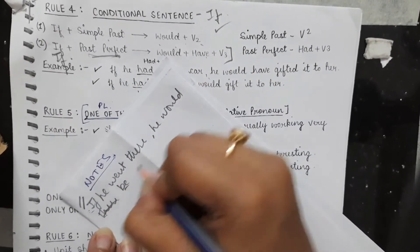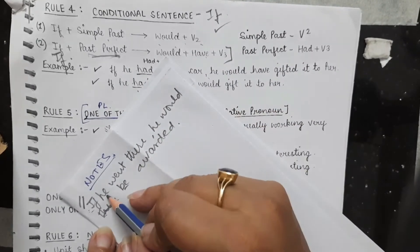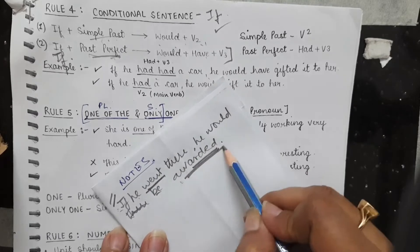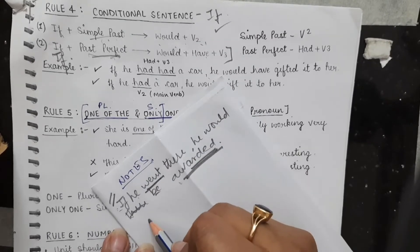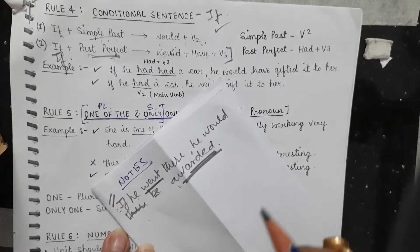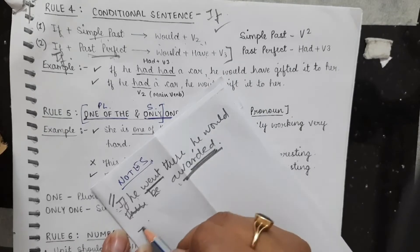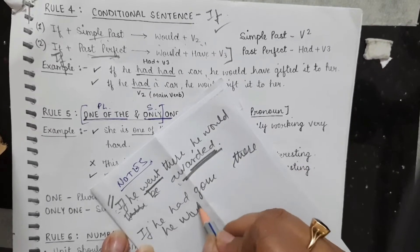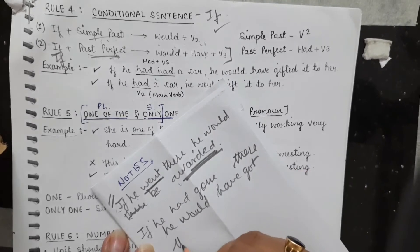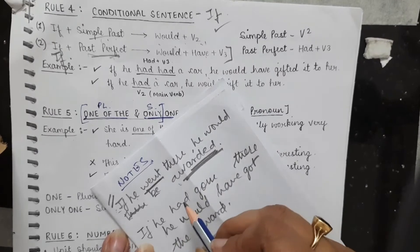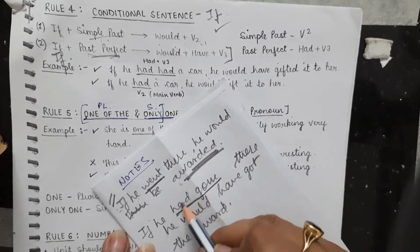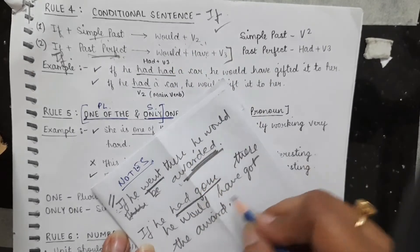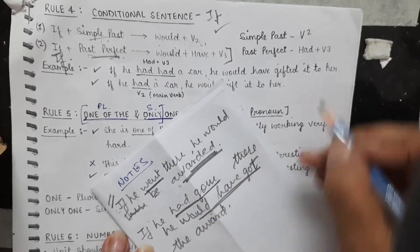In this sentence: 'If he went there, he would be awarded' — simple past tense is used with 'if', so 'would' plus second form of verb follows. Now look at the past perfect example: 'had gone' is used in the first clause — past perfect. So in the second clause, it becomes 'would have got', that is, 'would have' plus third form of the verb.